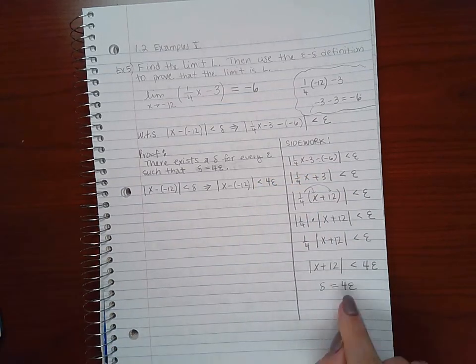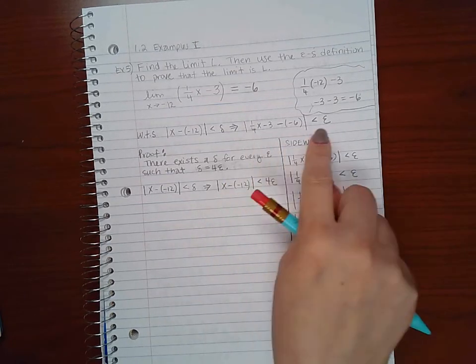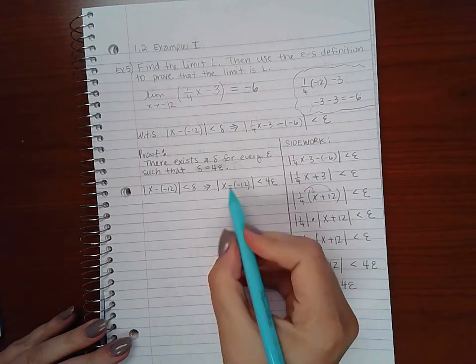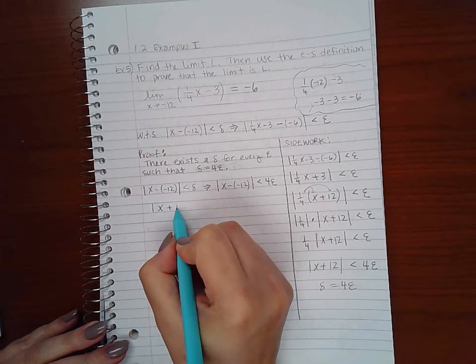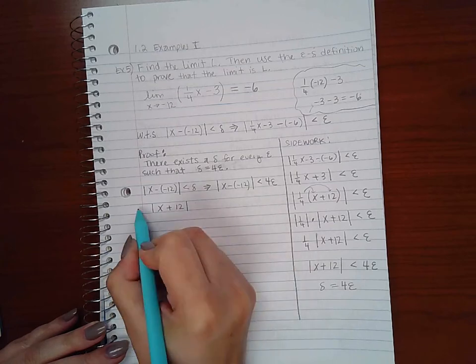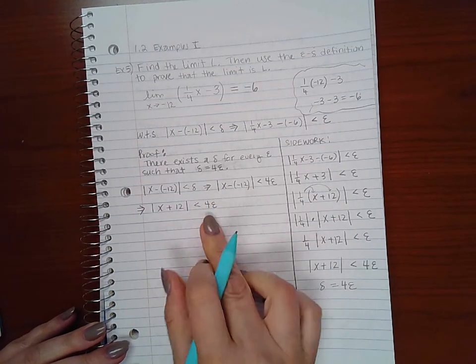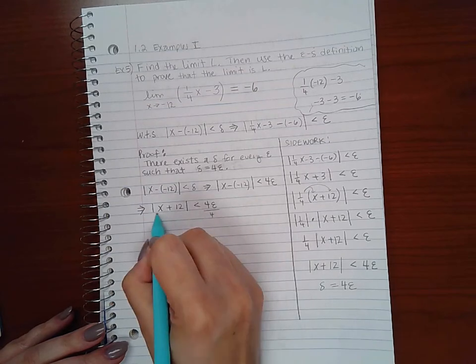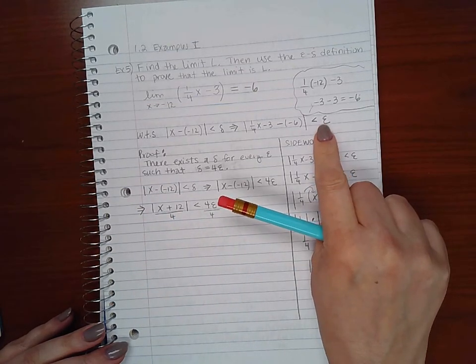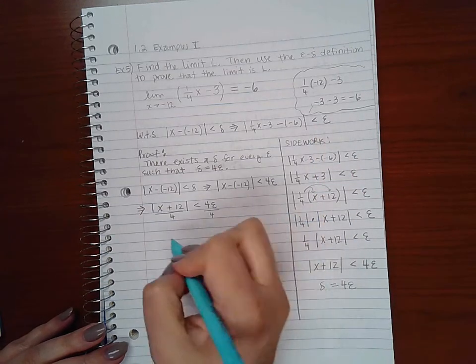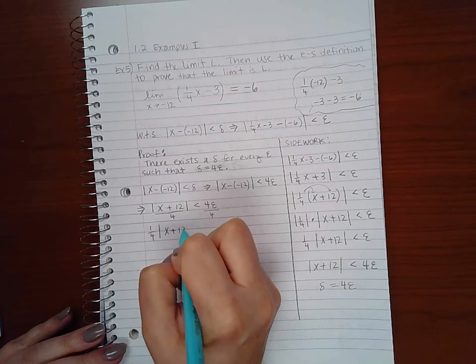Now I'm going to work my way backwards to get the right hand side. The first thing I'm going to do is combine those negatives. Next thing I'm going to do is divide both sides by 4 to get epsilon all by itself, because that's what we want at the end of our proof. So I get 1/4 times |x plus 12|.